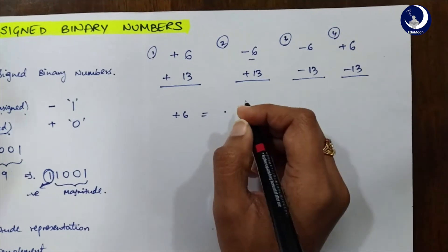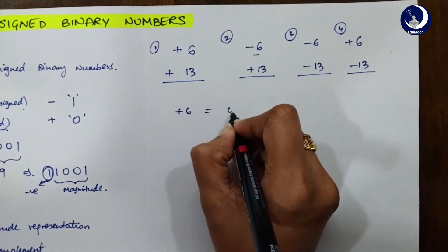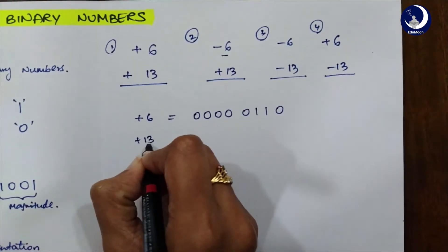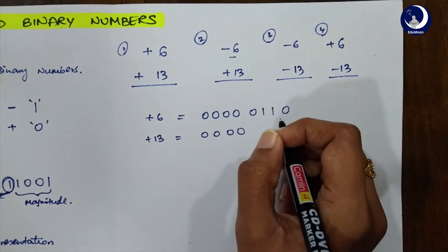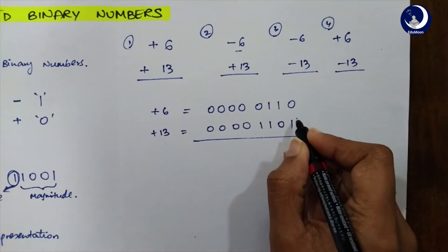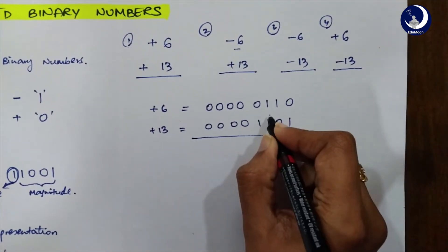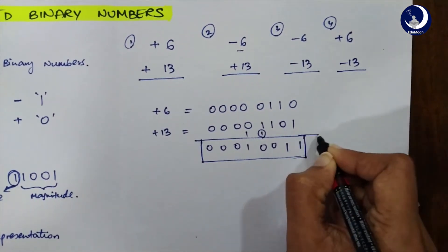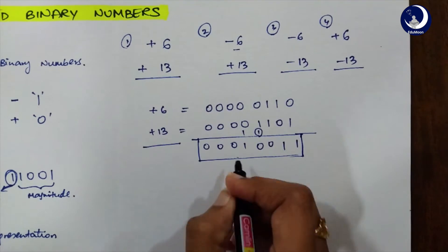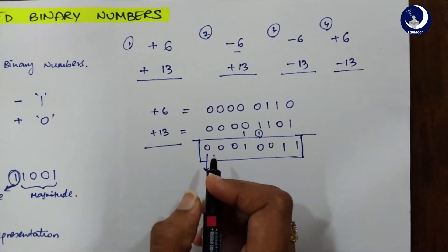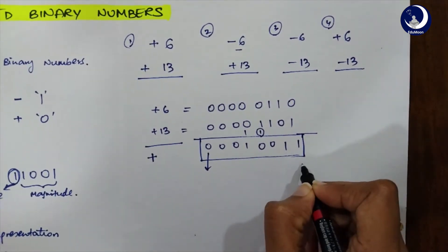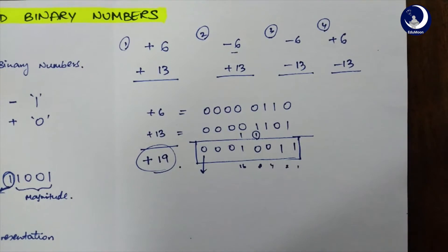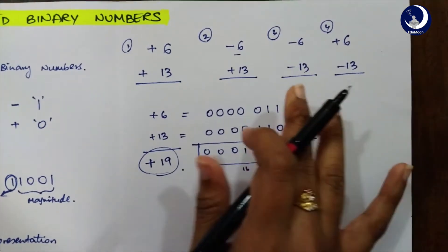Let's consider the first example: plus 6 plus 13, using 8 bits. Plus 6 is represented as 0 0 0 0 0 1 1 0, and plus 13 is 0 0 0 0 1 1 0 1. Doing the regular binary addition: 0 plus 1 is 1, 1 plus 0 is 1, 1 plus 1 is 0 with carry 1, and so on, giving us a result. The leftmost bit is 0, which means positive, and converting the result gives us 19.